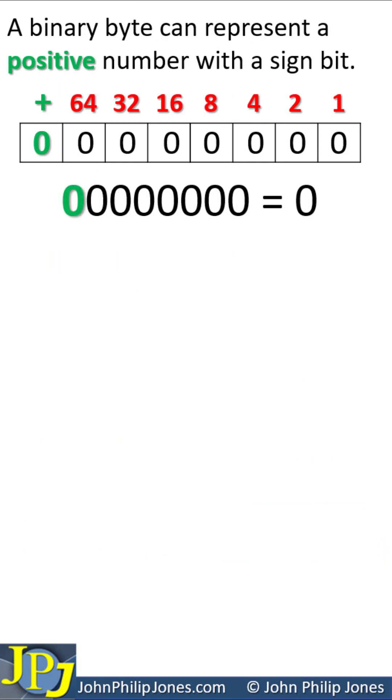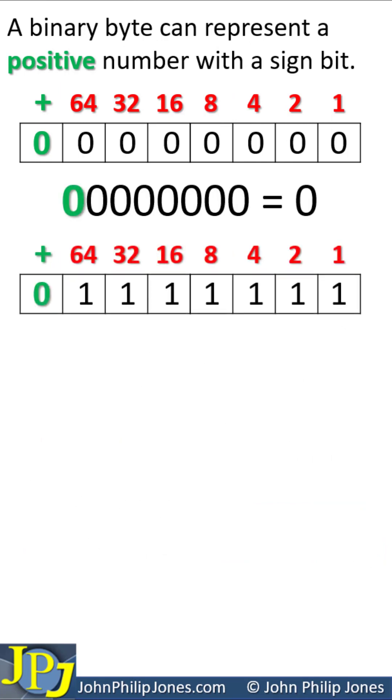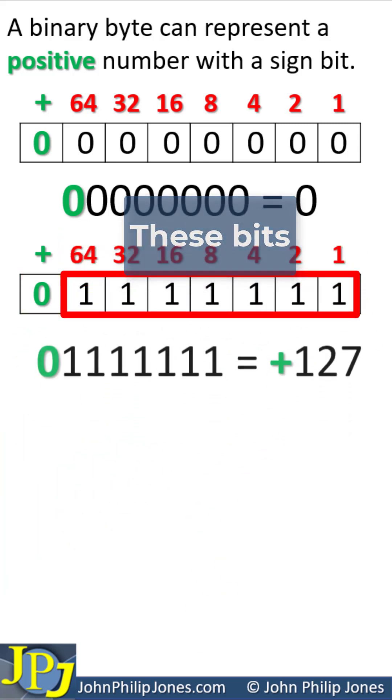We've already seen that this will give us 0. If we look at this number, we can see we've got positive, and if we add up all of the position coefficients for these numbers, we get 127.